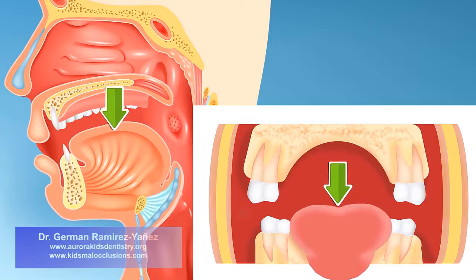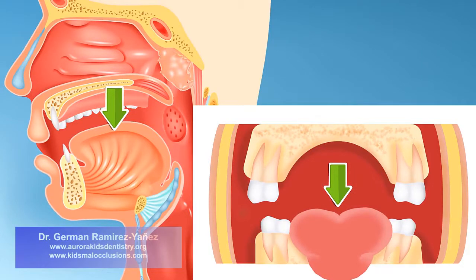In order to breathe through your mouth, your lower jaw has to come down, and your tongue has to rest on the floor of your mouth.